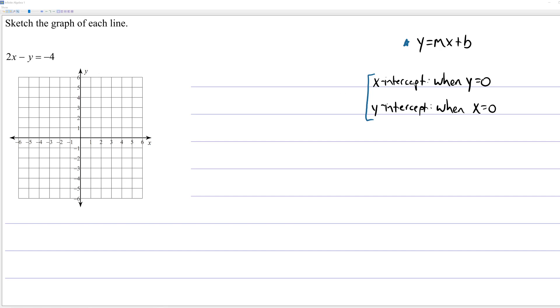So the x-intercept of the line, that's the point where the line crosses the x-axis. Well, if you're on the x-axis, it means your y-value is zero. So, to find the x-intercept of the line, what you can do is replace the y-variable with zero.